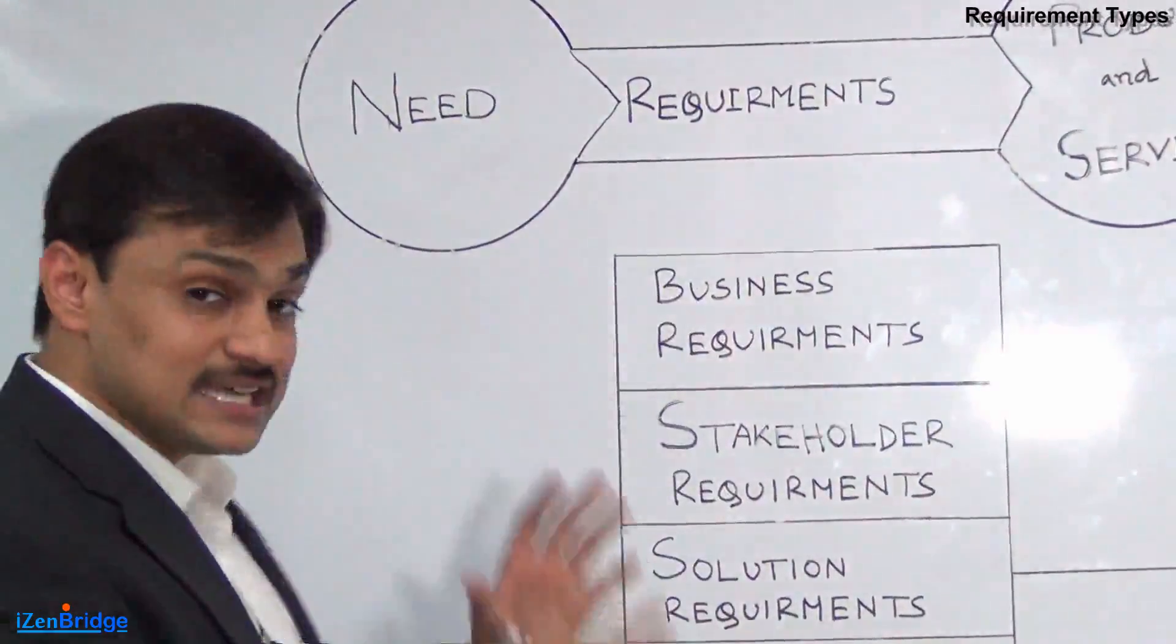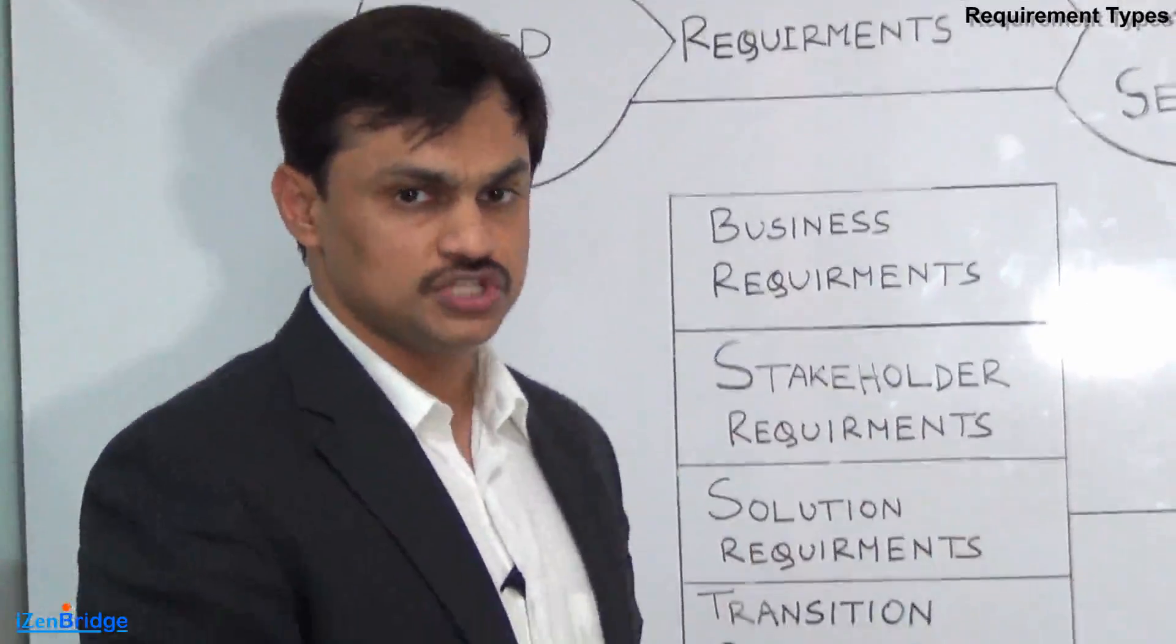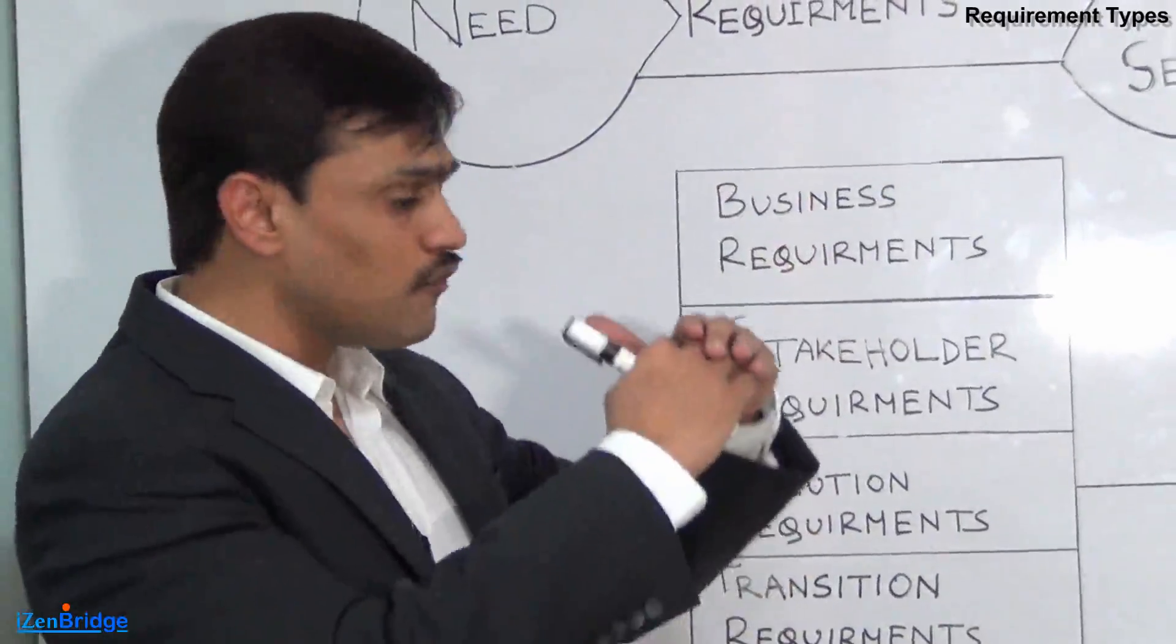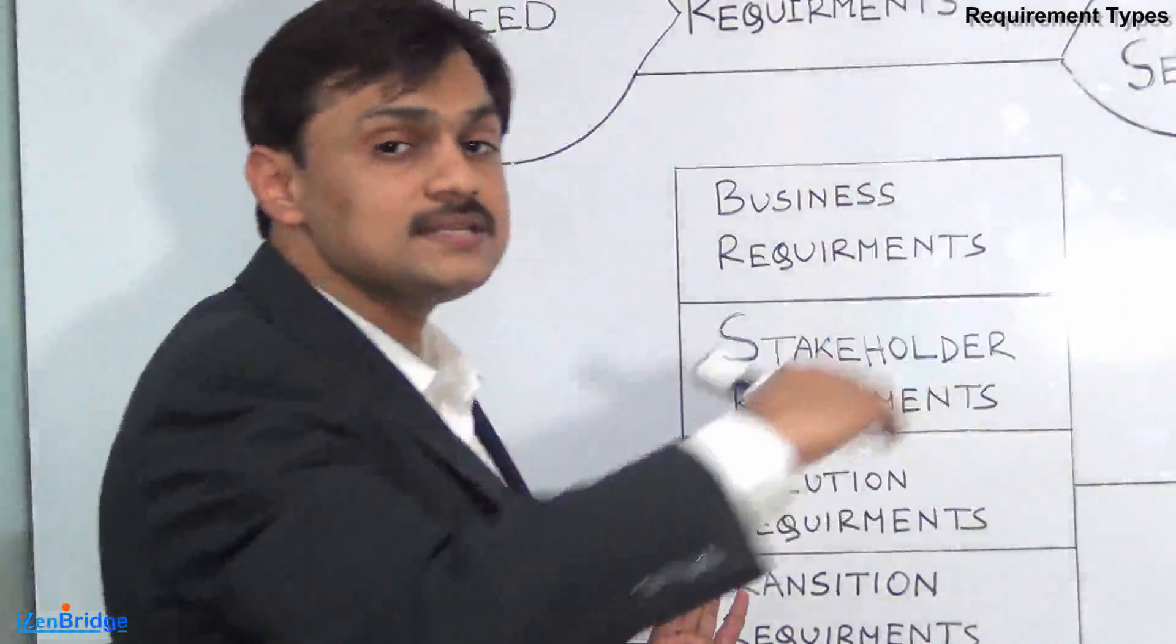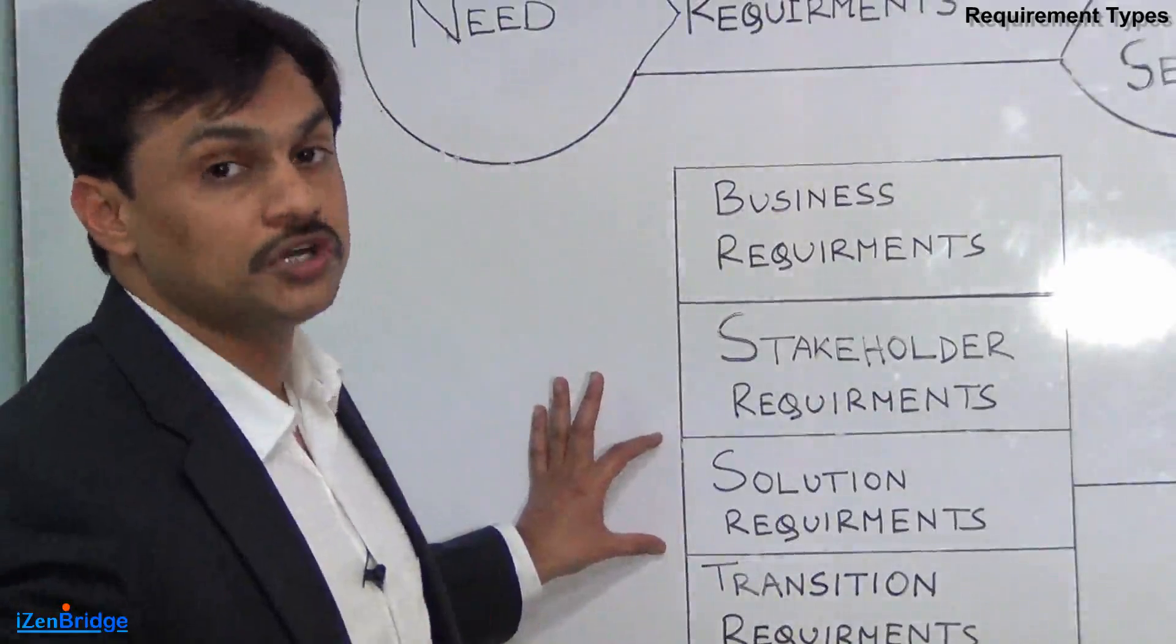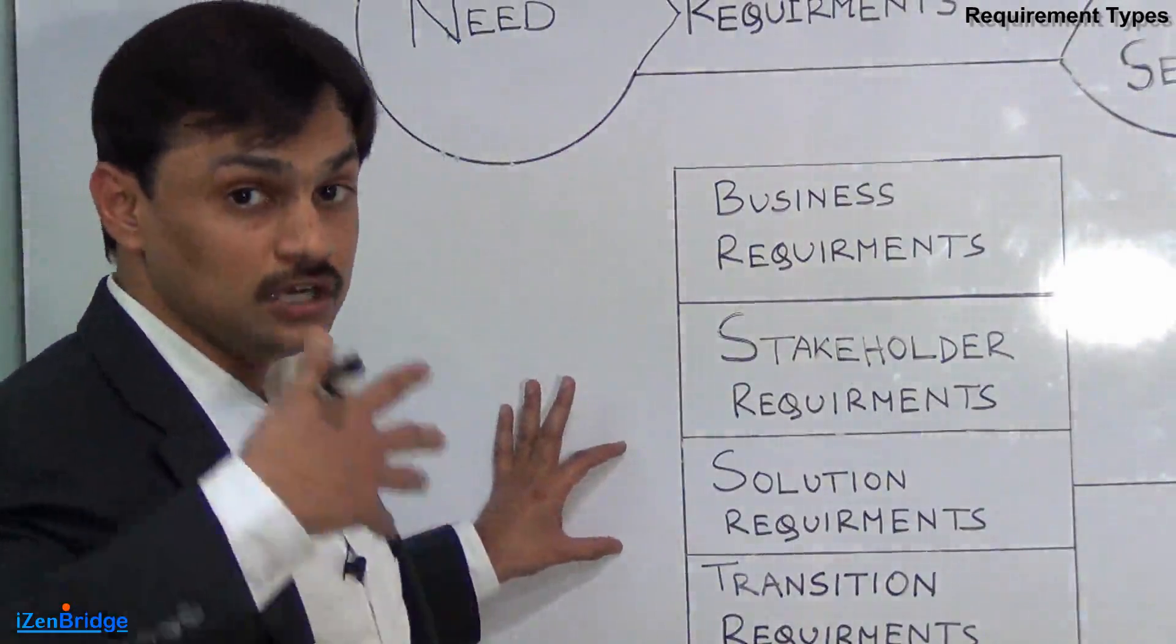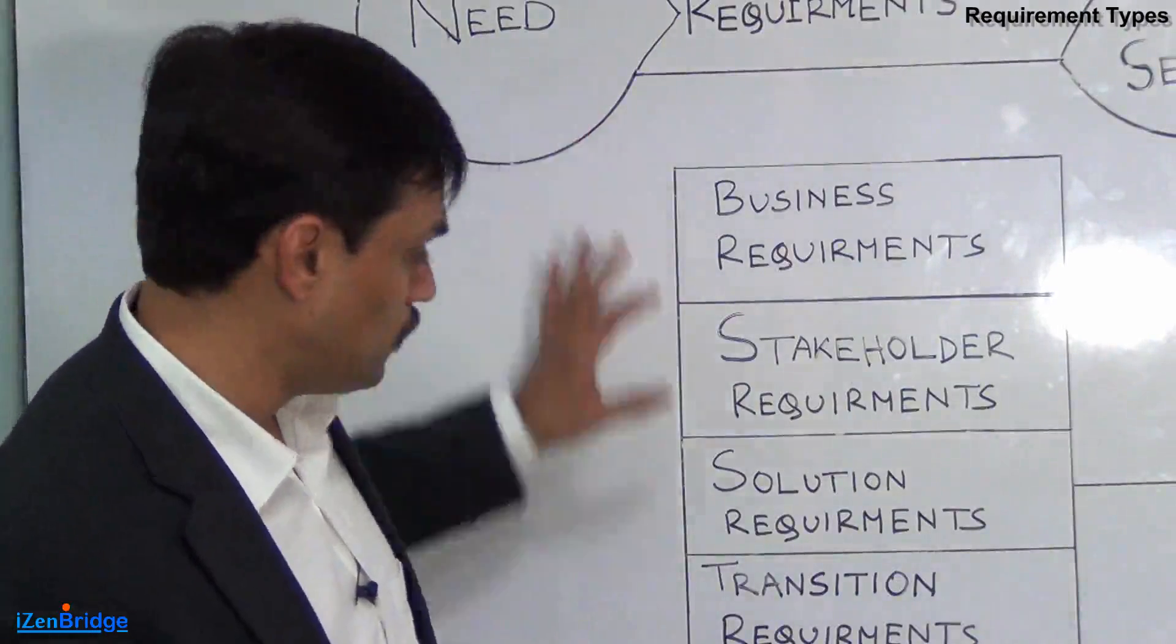These requirements get compiled as you think of various solutions which can meet these stakeholder needs. You compile them as a set of features or functional requirements which must exist in the to-be system or proposed system. These are solution requirements. The solution which you are giving to fix this business need should have some functional features which will help you meet this particular goal.